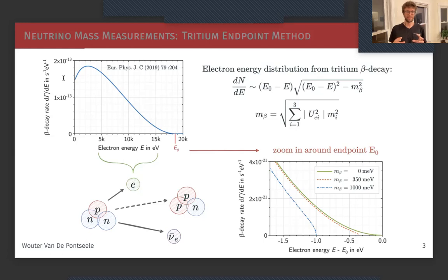If we understand this distribution very well, we can infer information about the neutrino mass because the total energy in this decay is fixed at something like 18,500 electron volts.